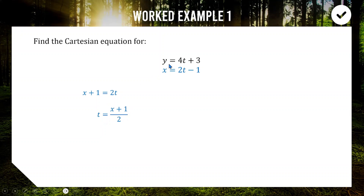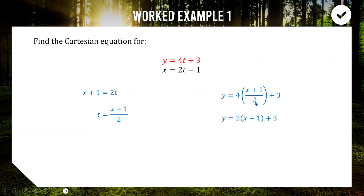Now we're going to take our first equation, the one involving y, and substitute in the fact that t is equal to x plus one over two. Then our y equation won't have a t in it — it'll have an x in it, giving us a Cartesian equation. Subbing that in, we change t to x plus one over two. Using the fact that four over two equals two, the fraction simplifies. Expanding and simplifying, we end up with y equals two x plus five. That is our Cartesian equation for these two parametric equations.